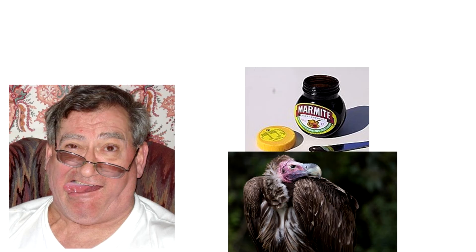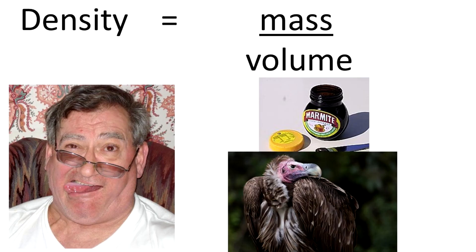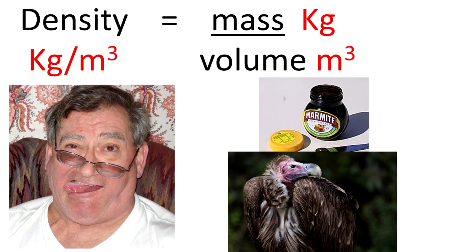Here's my dad — and that reminds me: don't smoke pot, kids. My dad likes to take marmite and spread it on top of a vulture. That reminds me that D equals M over V: density equals mass divided by volume. The units of density depend on the units given — if mass is in kilograms and volume in meters cubed, density is kg per meter cubed, but it could also be grams per centimeter cubed. Watch out for those.